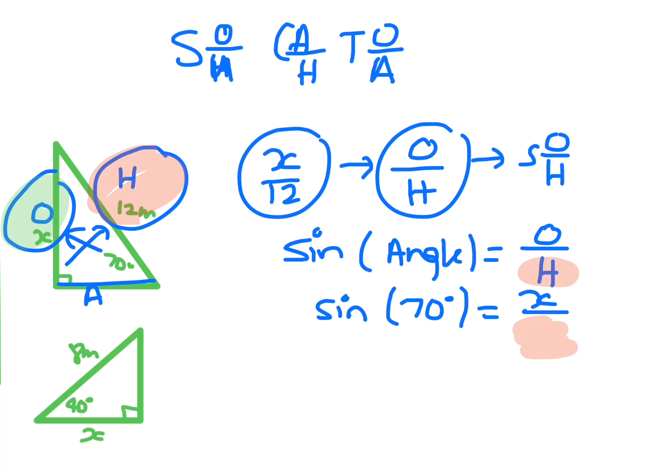Okay, so that means that that will be opposite on hypotenuse. The hypotenuse is equal to 12. Okay, so to solve that, you've got X on 12 equals sine 70.